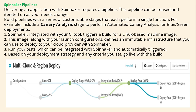Delivering an application with Spinnaker requires a pipeline. This pipeline can be reused and iterated on as needed. You build the pipeline with a series of customizable stages, each performing a single function — for example, including a canary analysis stage for automated canary analysis for blue-green deployments. Spinnaker integrates with your CI tools to trigger a build for a Linux-based machine image. This image along with your launch configuration defines immutable infrastructure that you deploy to your cloud providers with Spinnaker. You can also run tests integrated with Spinnaker that are automatically triggered, and then go live with the build based on your deployment strategy and criteria.